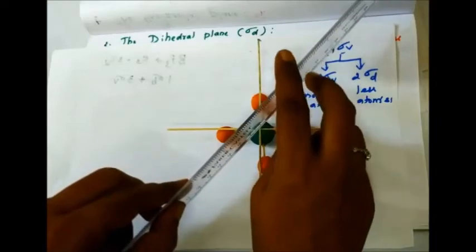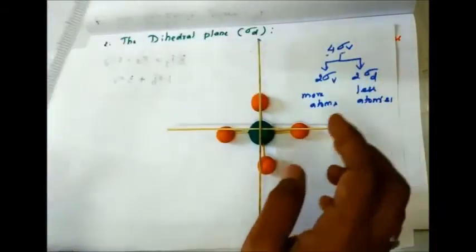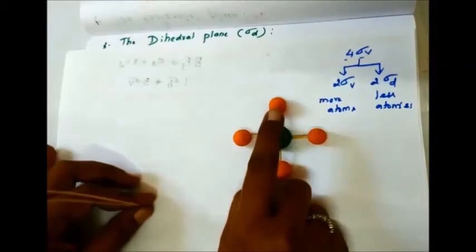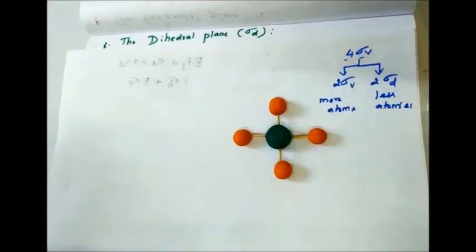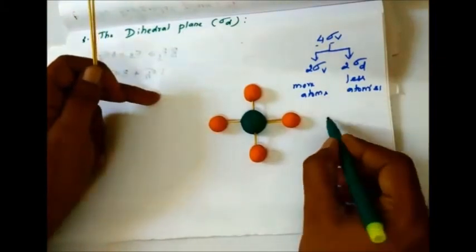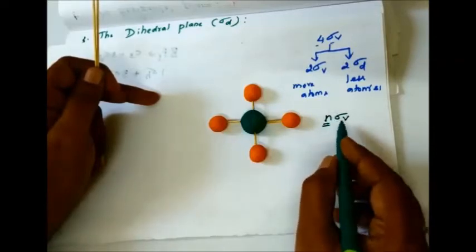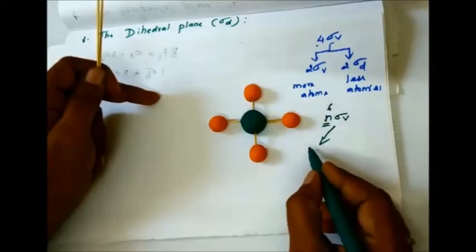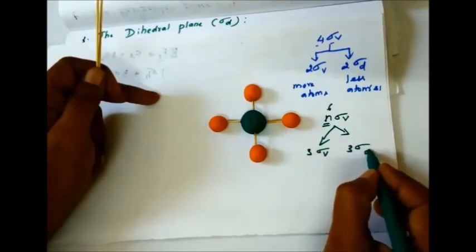We can say sigma d is the dihedral plane. In general, when there is an even number of sigma v planes — for example, if n is 6 — then half (3) are sigma v and the other half (3) are sigma d. So n sigma v planes, where n is even, gives n/2 sigma v and n/2 sigma d.